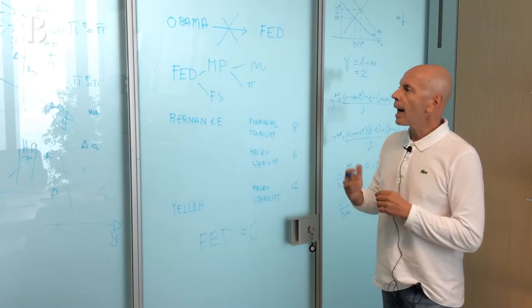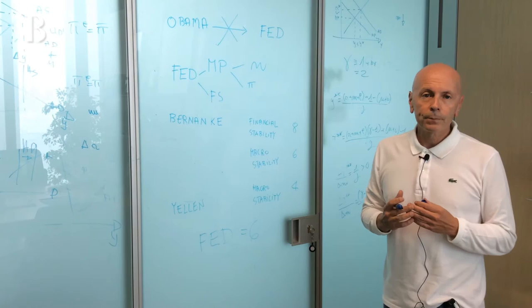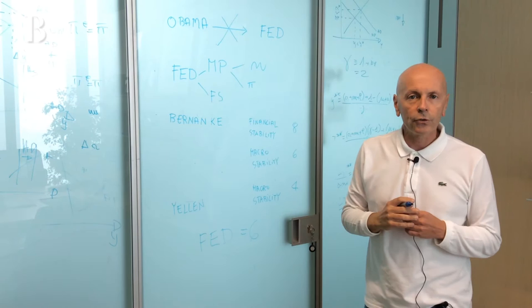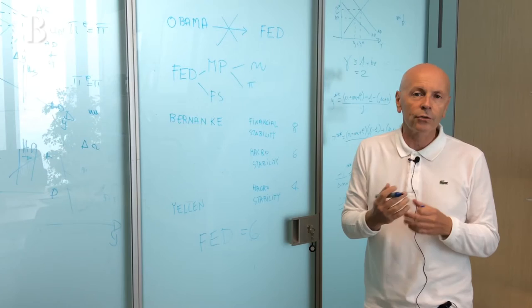The Fed is an independent central bank, but how independent is it? The overall evaluation is that it's a weak independence. Why? Essentially for two reasons. First, the Federal Reserve is involved in two fields: on one side, monetary policy; on the other side, financial supervision. The more a central bank is involved in more than one field, the more there is ambiguity and uncertainty in its action.